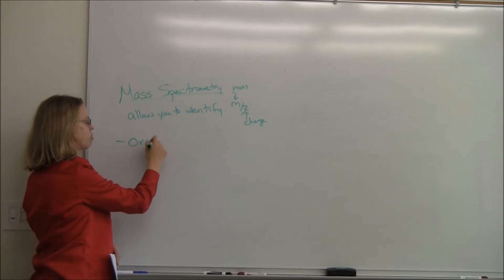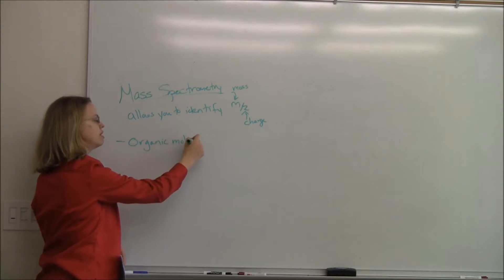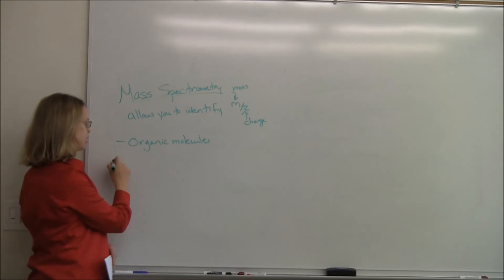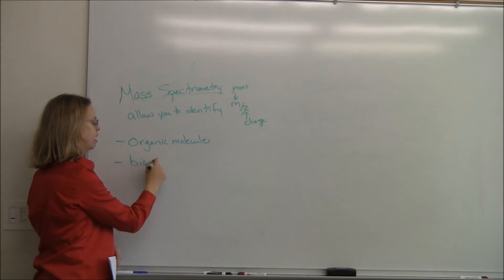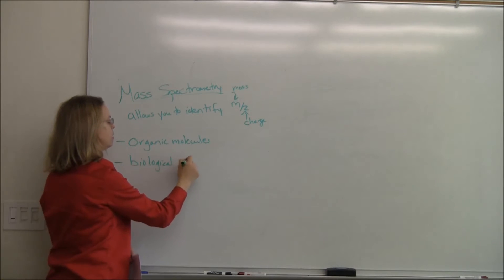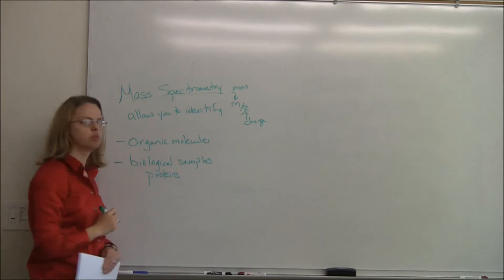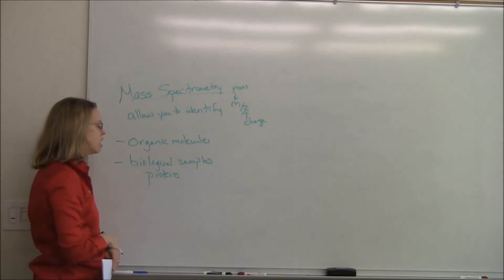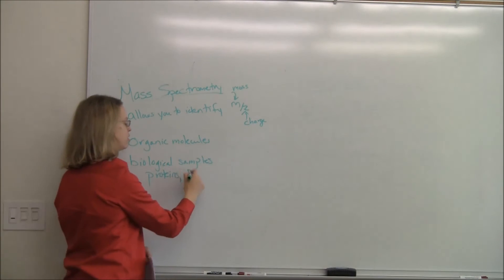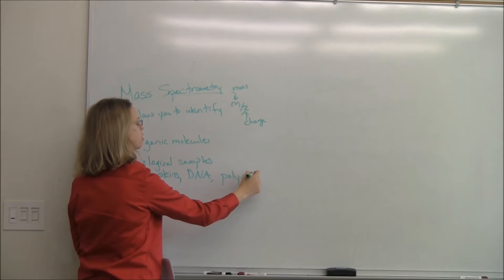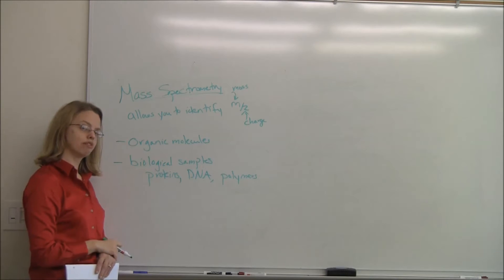It's been traditionally used for small organic molecules. So if you were an organic chemist, you wanted to know what you made, you might take it over to a mass spec. But the field today is really in the biological samples. If you were to go to a mass spectrometry meeting today, you would see that mass spectrometry has really opened up the whole field of proteomics. There's lots of proteins, you can even do DNA, polymers, other things. So large biomolecules is really where the field is today.